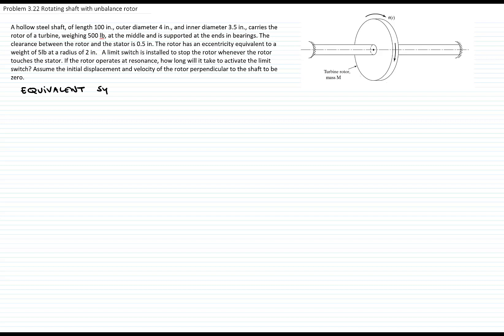They tell us that we have a hollow steel shaft of length 100 inches, and the rotor is located at the middle of that shaft. We will take that shaft as a simple support beam, and we will find the equivalent constant of the spring for that beam.